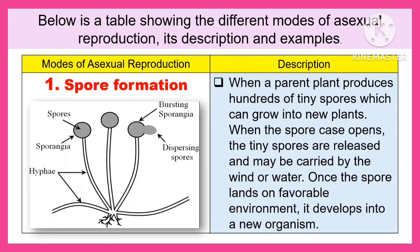Below is a table showing the different modes of asexual reproduction, its description, and examples. The first one is spore formation. A parent plant produces hundreds of tiny spores which can grow into a new plant. When the spore case opens, the tiny spores are released and may be carried by the wind or water. Once the spore lands on a favorable environment, it develops into a new organism.